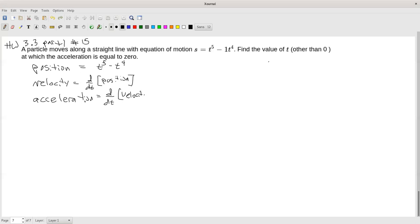To do this problem, I have to first get the derivative of my original function, then take its derivative to get acceleration. So derivative of t to the 5th is 5t to the 4th minus derivative of t to the 4th is 4t to the 3rd. So now I have velocity, and then I can use that to get acceleration by taking its derivative.